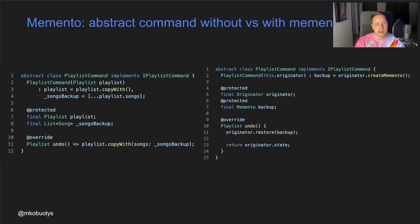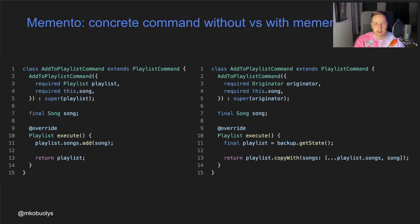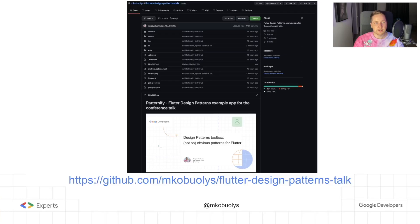This is the comparison of our abstract command class without and with Memento. Without Memento we simply stored the state backup directly in the command and mutated it directly when undoing. By using Memento, we encapsulated the state inside our originator and Memento classes. The playlist command no longer knows any details about the state — it just calls the originator's restore method for undo operations, and the backup is also created via the originator method. It's exactly the same with the concrete command class. Comparing the two implementations, the state is no longer mutated directly in any way, which separates concerns and reduces the risk of negatively affecting our backup state.